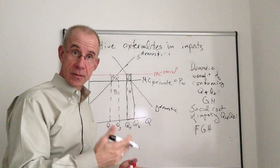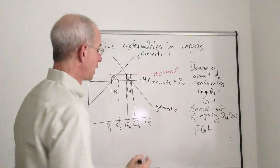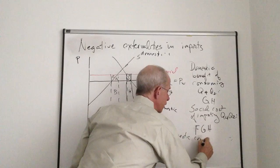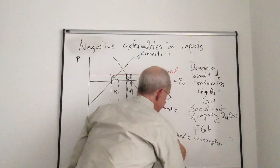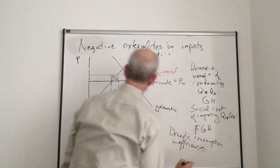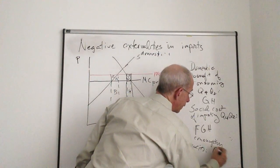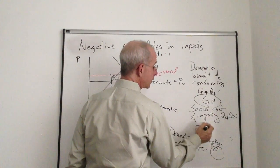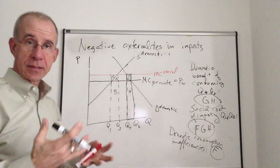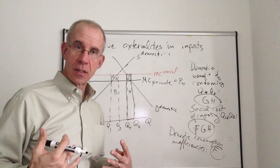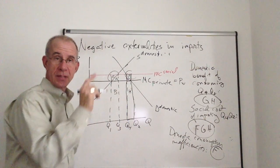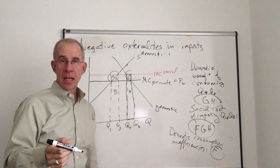So the domestic consumption inefficiencies of free trade is area F. It's the difference between the benefits of consuming it and the actual social costs. So what we have here is that from an economic standpoint, the importation of this product causes there to be these two deadweight losses, E and F.